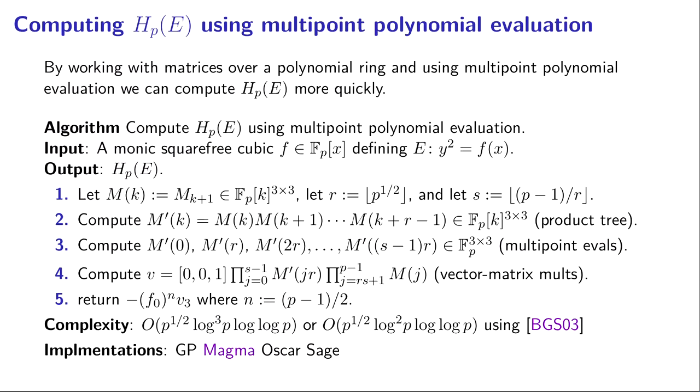Notice we're instantiating it not at 0, 1, 2, we're instantiating it at multiples of r because m prime of 0 is equal to the product of m of 0 times m of 1 times m of 2, etc., up to m of r minus 1.